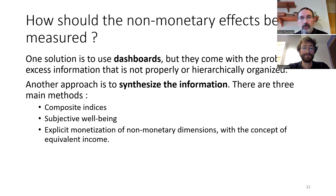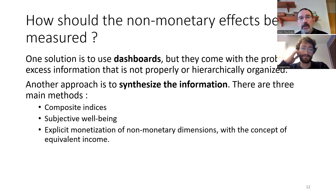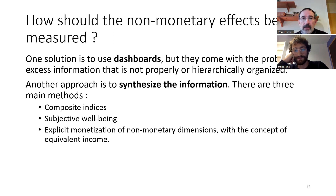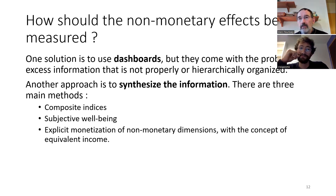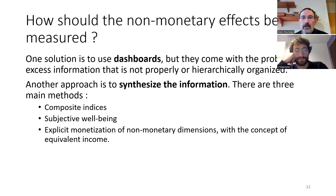How should we measure these non-monetary effects and how can we combine them with the monetary effects? One solution is to use dashboards — a description of the various dimensions one after the other in a separate way. Such dashboards come with the problem that they provide a lot of information, potentially too much, and this information is not properly or hierarchically organized. Another approach is to synthesize the information, and here there are three main ways: composite indices, subjective well-being measures, and an explicit monetization of non-monetary dimensions — in particular with the concept of equivalent income.